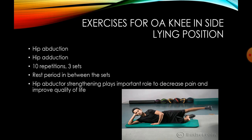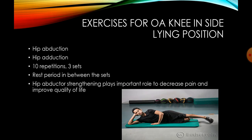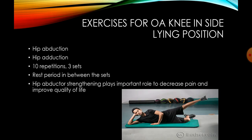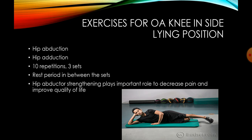Exercises for OA knee in lying position: hip abduction and adduction — 10 repetitions can be done and 3 sets can be done. Rest period should be given in between the sets. Hip abductor strengthening plays an important role to decrease pain and to improve quality of life.